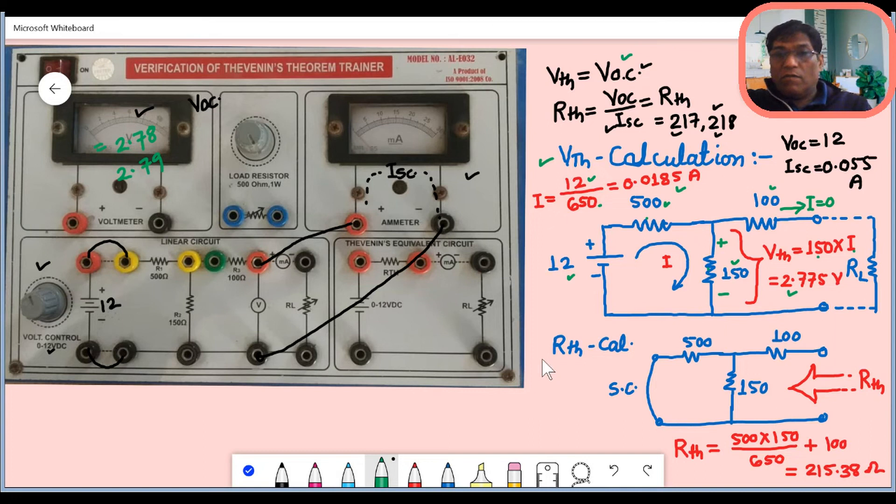Now we will see the second calculation of RTH. RTH calculation is very simple. This voltage source is shorted. This 500 and 150 came in parallel. So 500 into 150 divided by sum of this, 500 plus 150 is 650, R1 R2 by R1 plus R2, plus this is in series 100. This resistance is coming out to be exactly 215.38. This is the exact value.